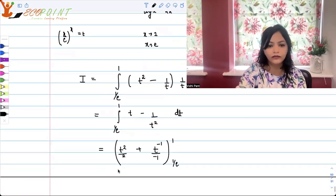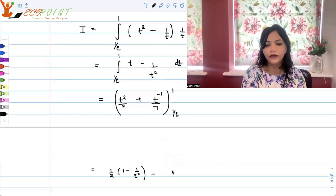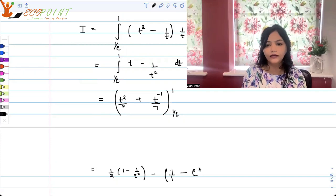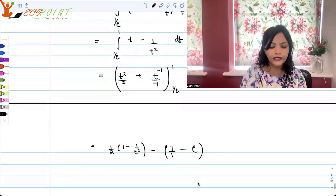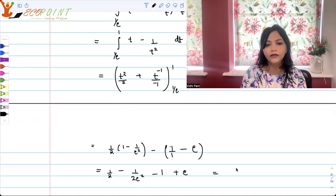It's going to be 1 by 2, 1 minus 1 upon e square, 1 upon e square minus, because it's minus 1 here, so minus 1 upon t it is. So 1 upon t minus 1 upon 1 minus e, 1 upon 1 upon e will give you e. So it's going to be half minus 1 upon 2 e square minus 1 plus e. So that's going to be...